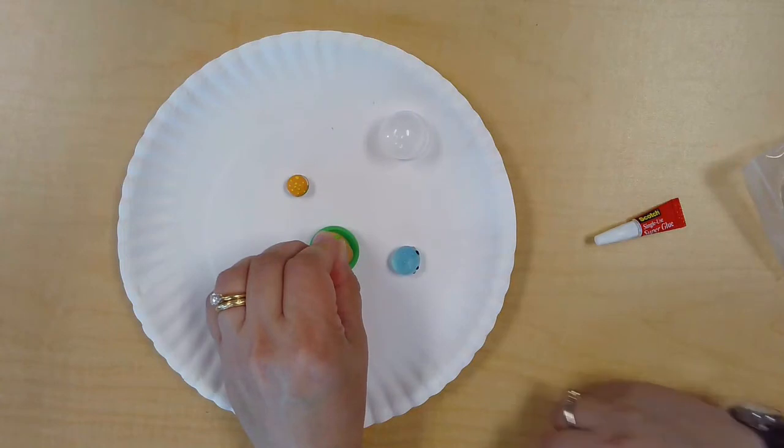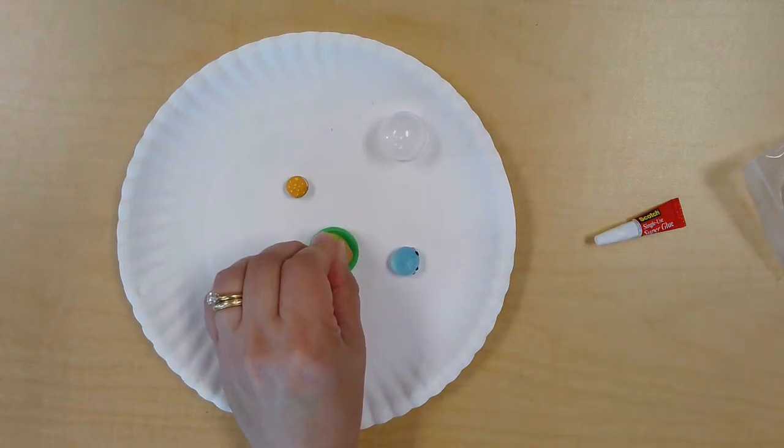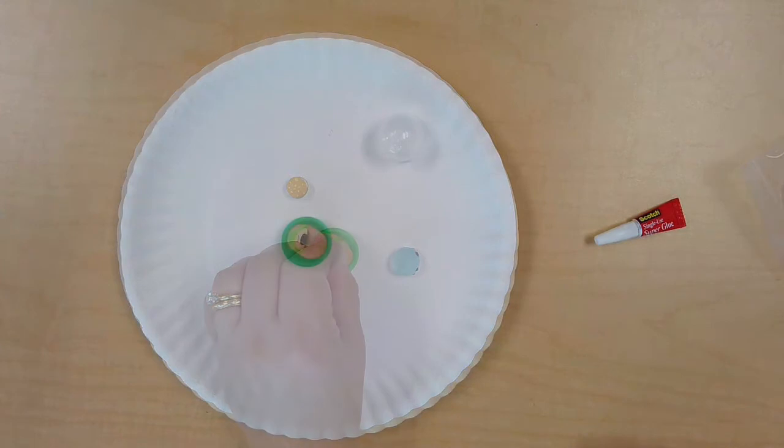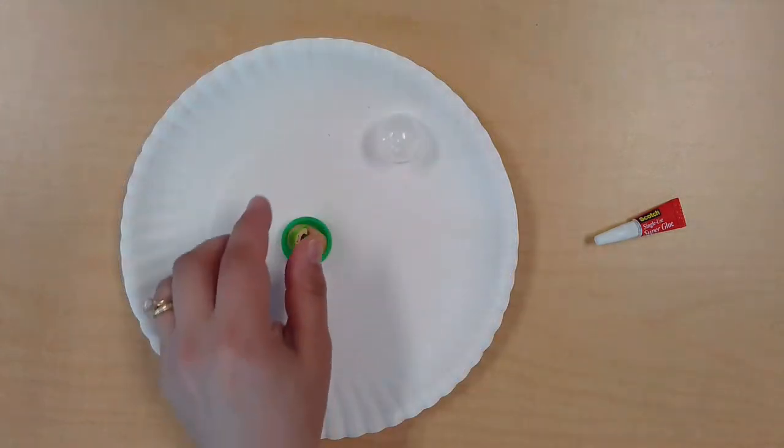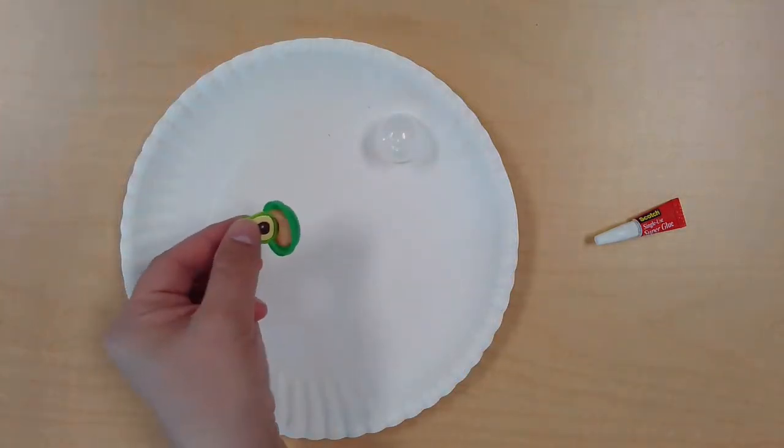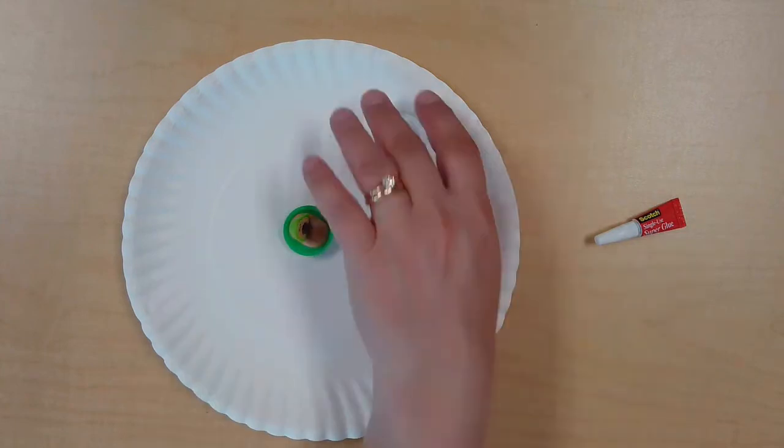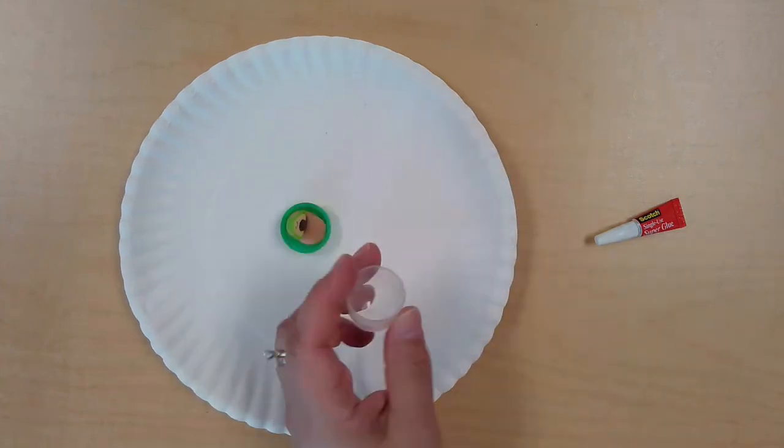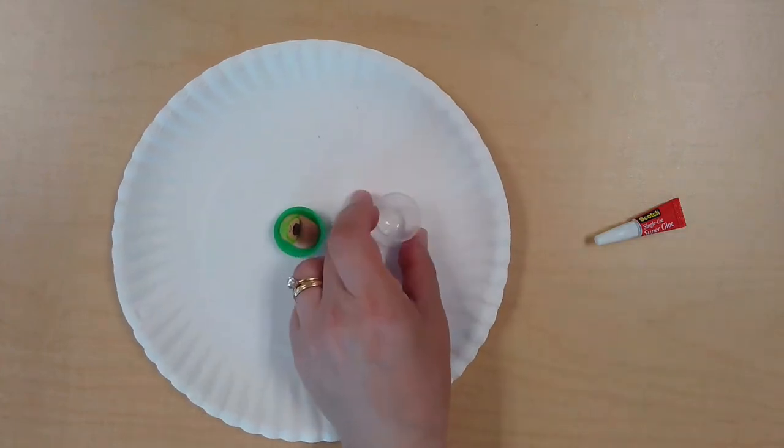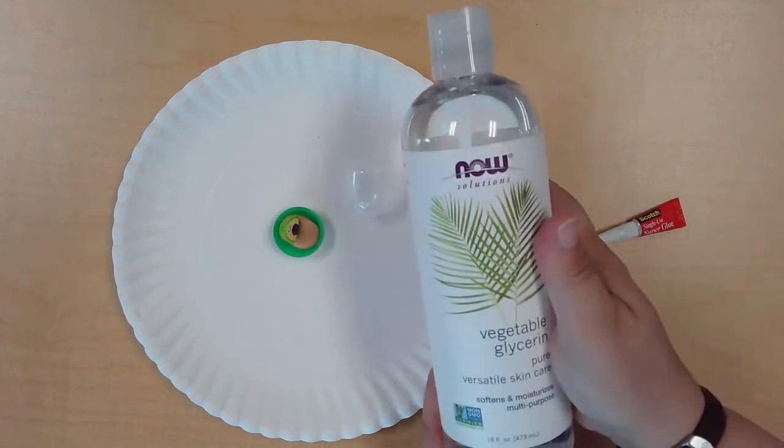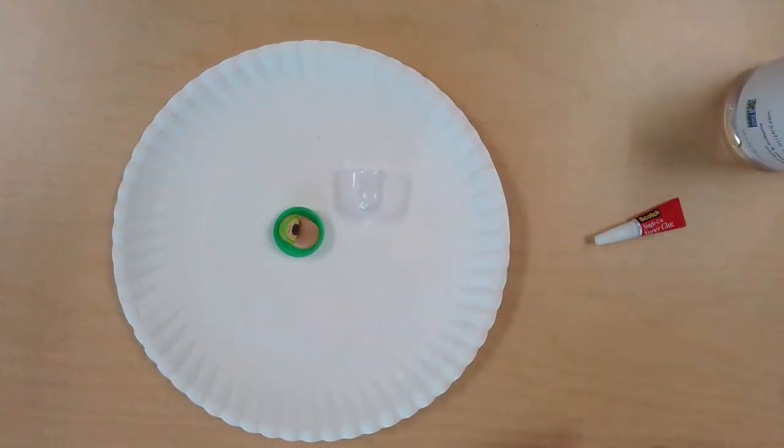Once your glue is dry and your slime charm is set, you'll be able to proceed. All right, everything is dried and ready to go, so now we're going to fill the snow globe. Using your lid, you're going to get your glitter, your glycerin, and your water.